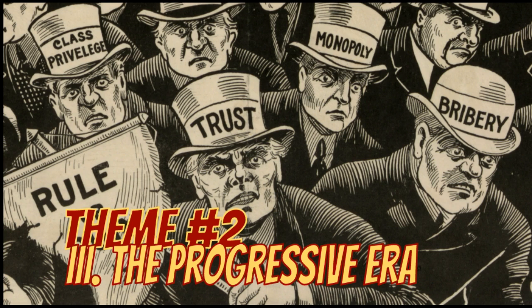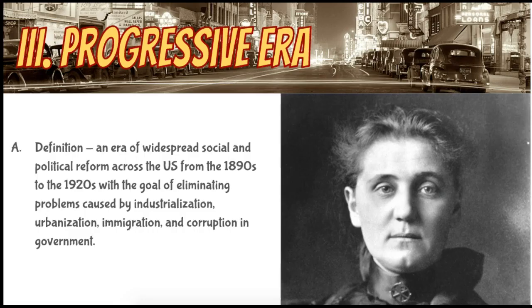As we go through this, I want you to think about our discussion on the Gilded Age, the robber barons, and industrialization, and how at times people really struggled. Then consider what we see in this video, where people are really trying to take hold of society and change it for the better. The Progressive Era is best defined as an era of widespread social and political reform that happened in the United States from the 1890s all the way up to the 1920s. The goal was often to eliminate many social problems caused by industrialization, immigration, urbanization, and corruption of government.